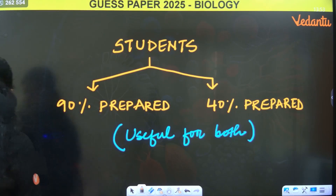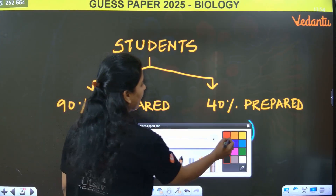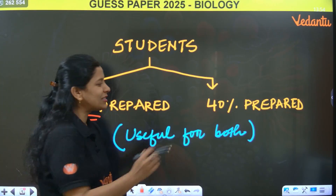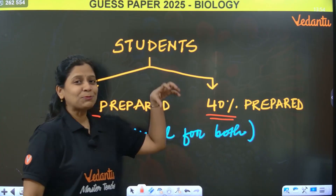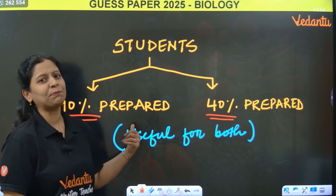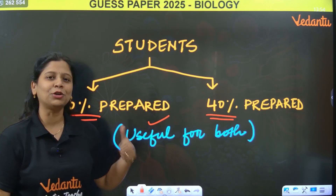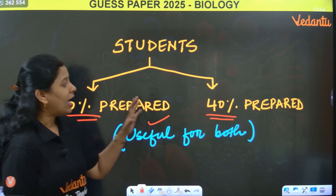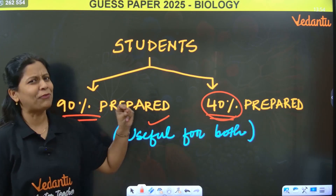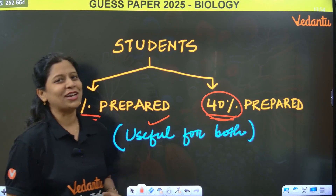Basically, students will be of two types. Some are already 90% prepared for the exam, and some students are still only 40% prepared. This particular guest paper is going to be useful for both categories. If you are 90% prepared, with these fast questions you can be fully prepared for tomorrow's exam. If 40% prepared, after this guest paper you can score 40 plus or 45 plus out of 50.